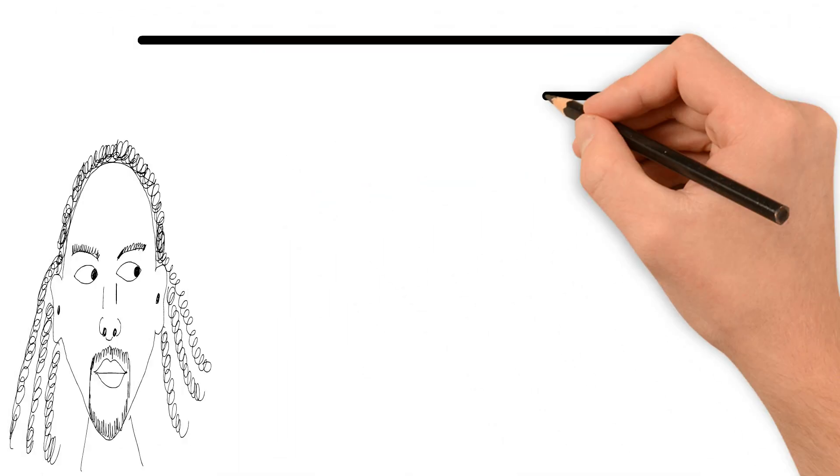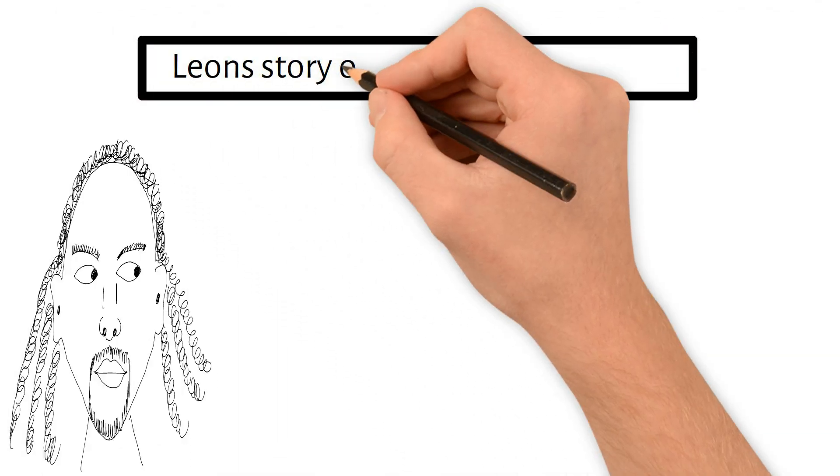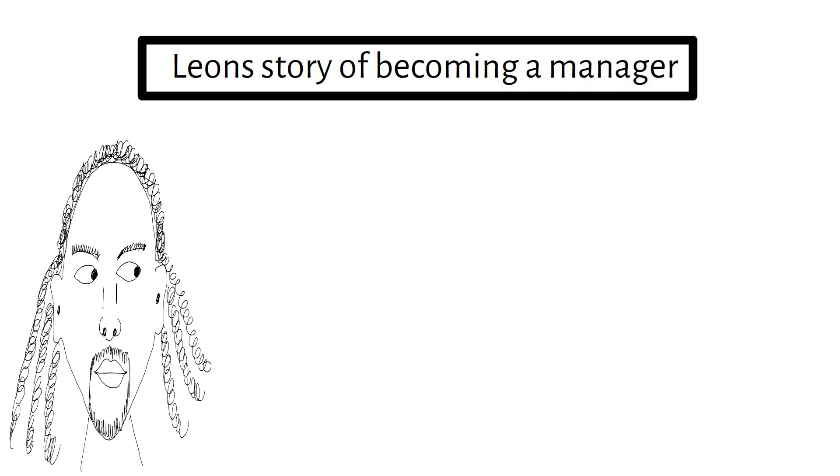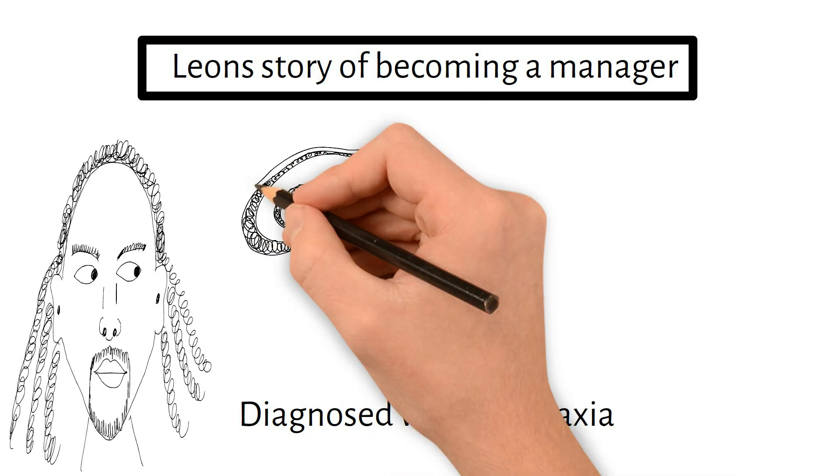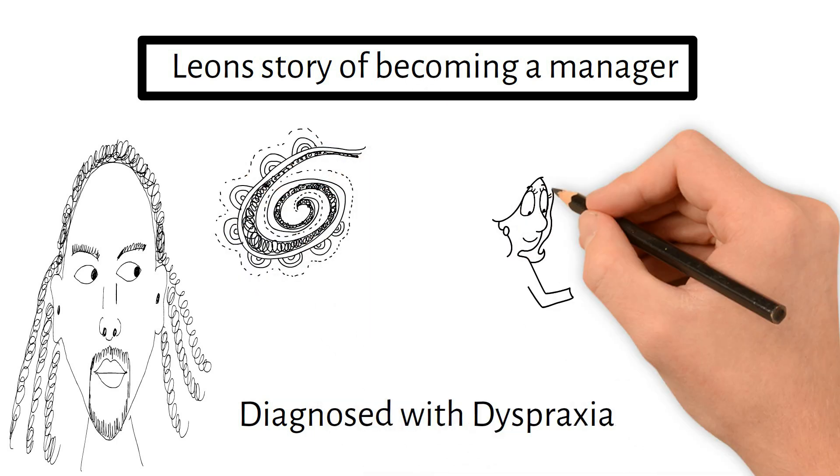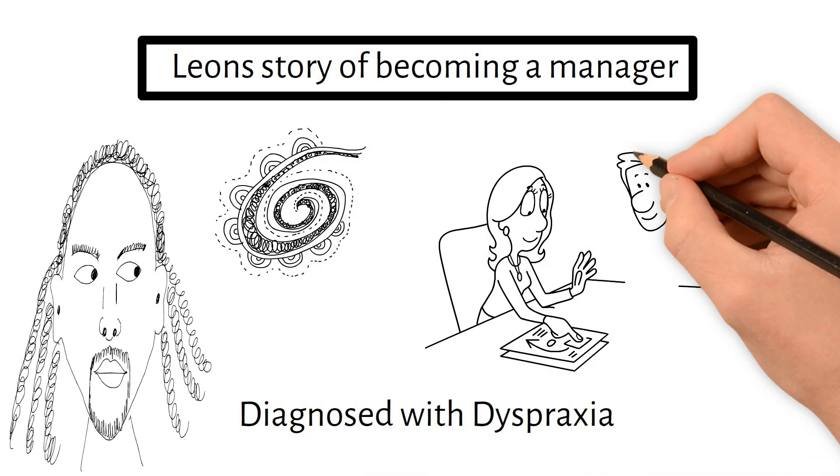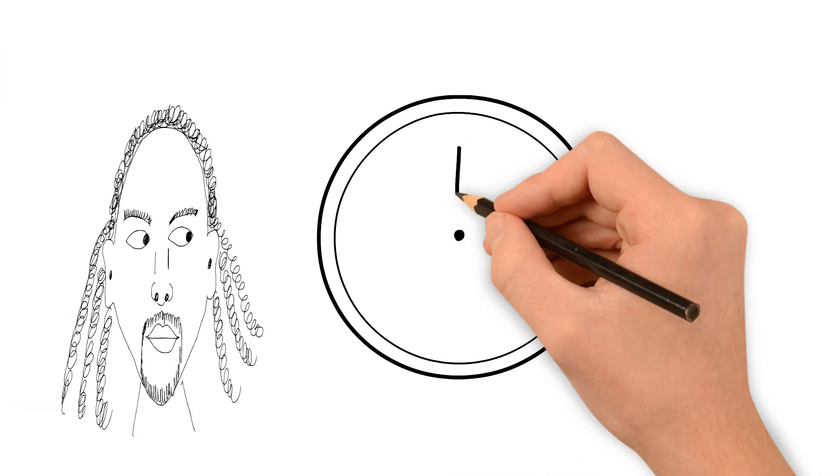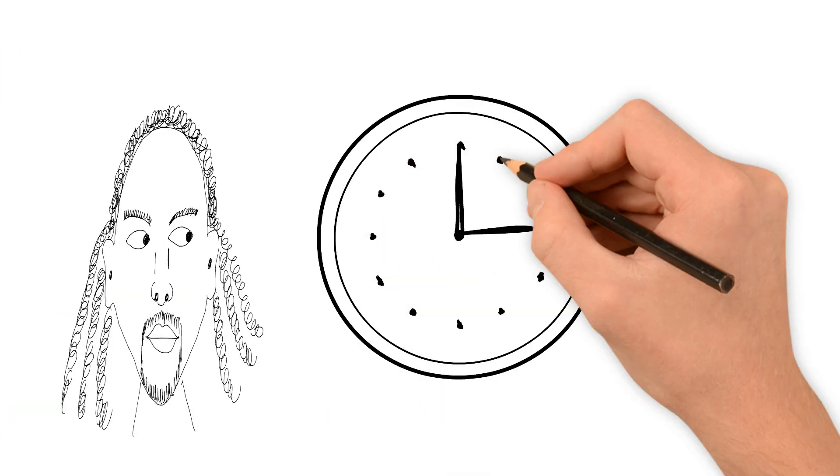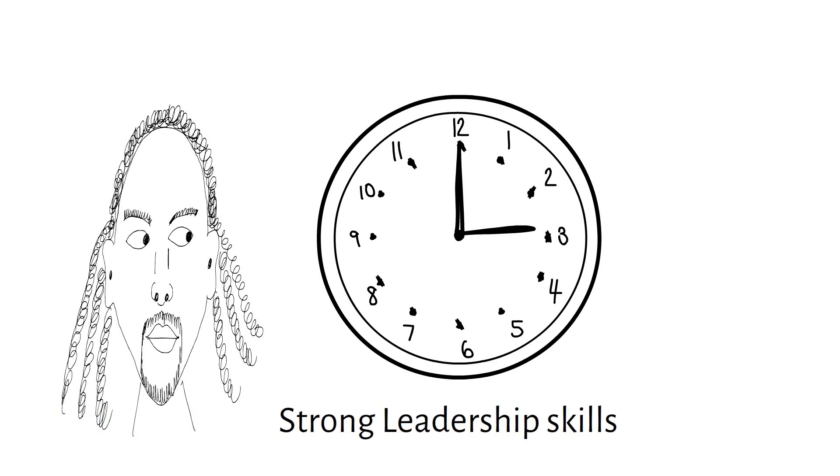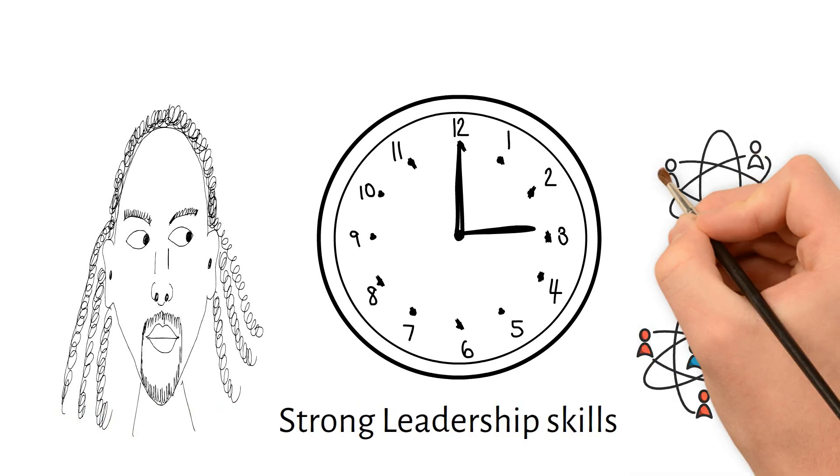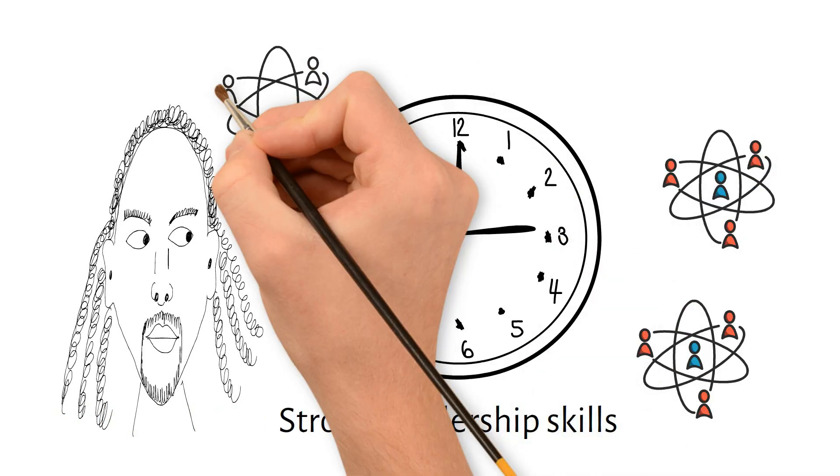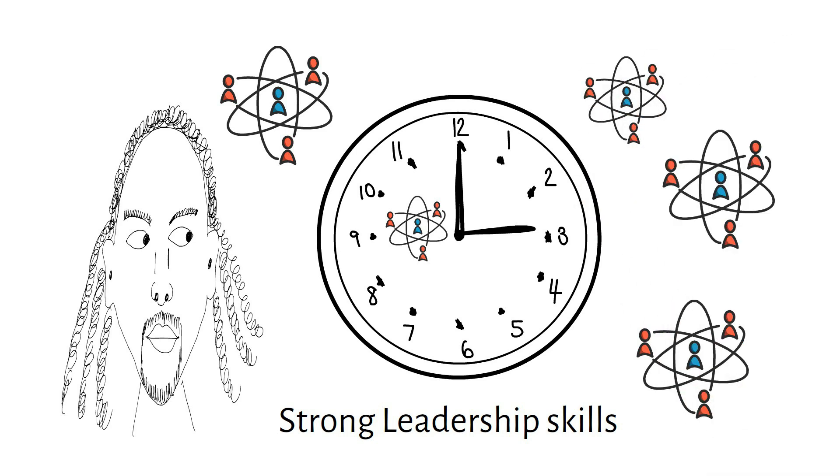Part 7. Leon's story of becoming a manager. Leon, diagnosed with dyspraxia once struggled with coordination and task management. However, with supportive colleagues and reasonable adjustments like task planning tools, Leon thrived. Over time, Leon developed strong leadership skills and became a manager, inspiring his team with his persistence and adaptability.